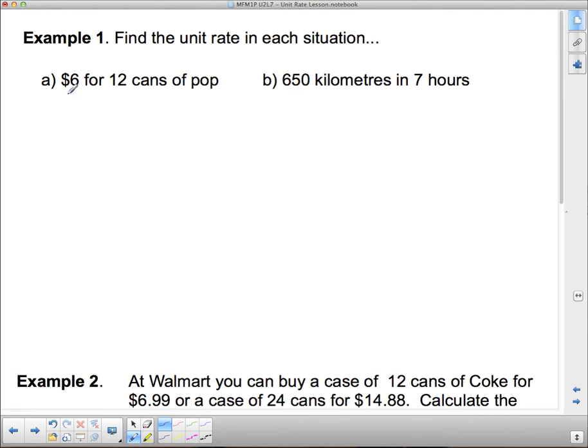So, we're going to take a minute to look at a couple different unit rates. Find the unit rate in each situation. $6 for 12 cans of pop. Now, when I write it out like this, usually, whatever number comes first, I'm going to put on top, and whatever number comes second, I'm going to put on the bottom. So, it's $6 for 12 cans. When I do 6 divided by 12, I get 0.5, and that's going to be 0.5 dollars per can, or 50 cents for each can of pop.